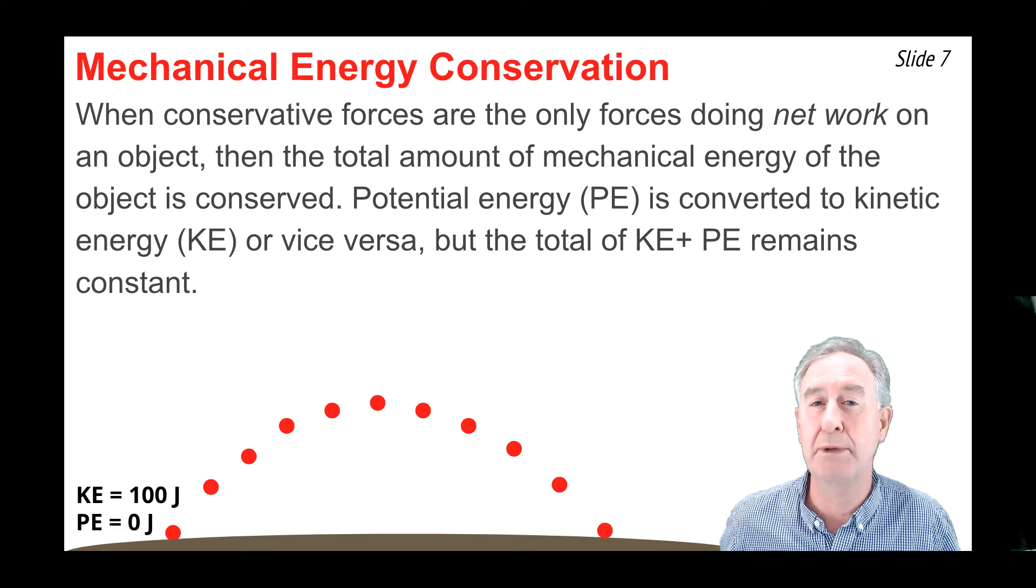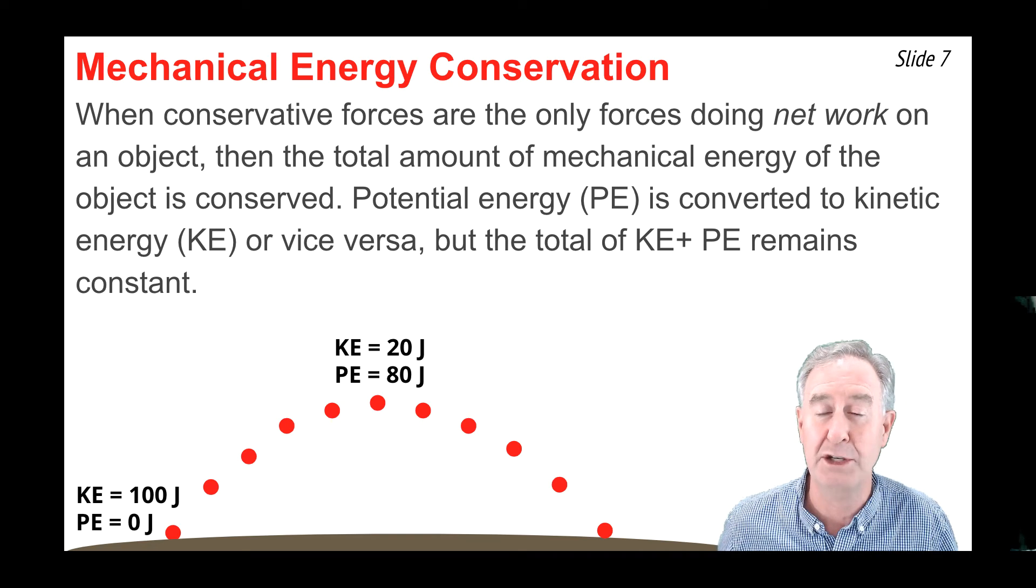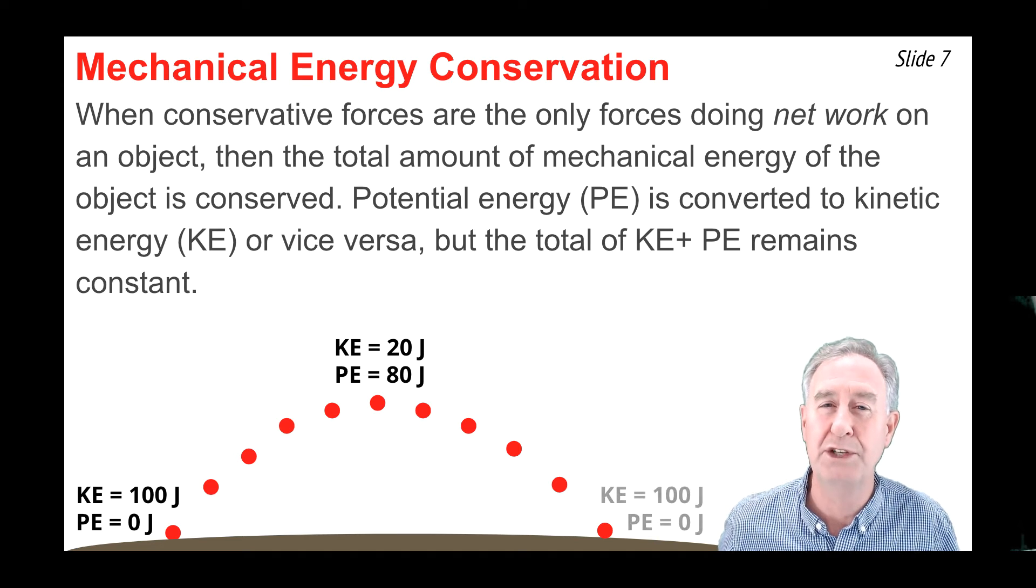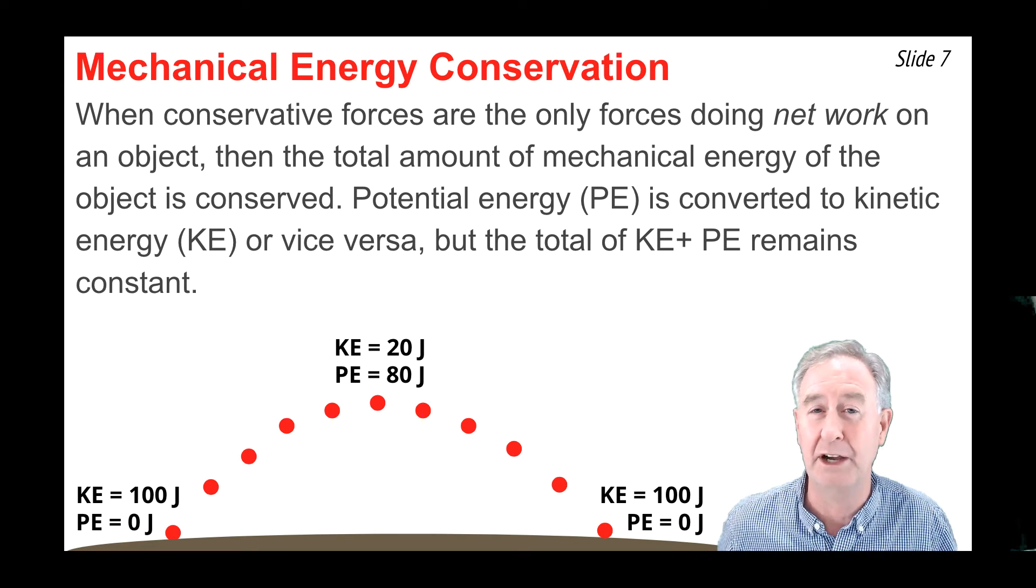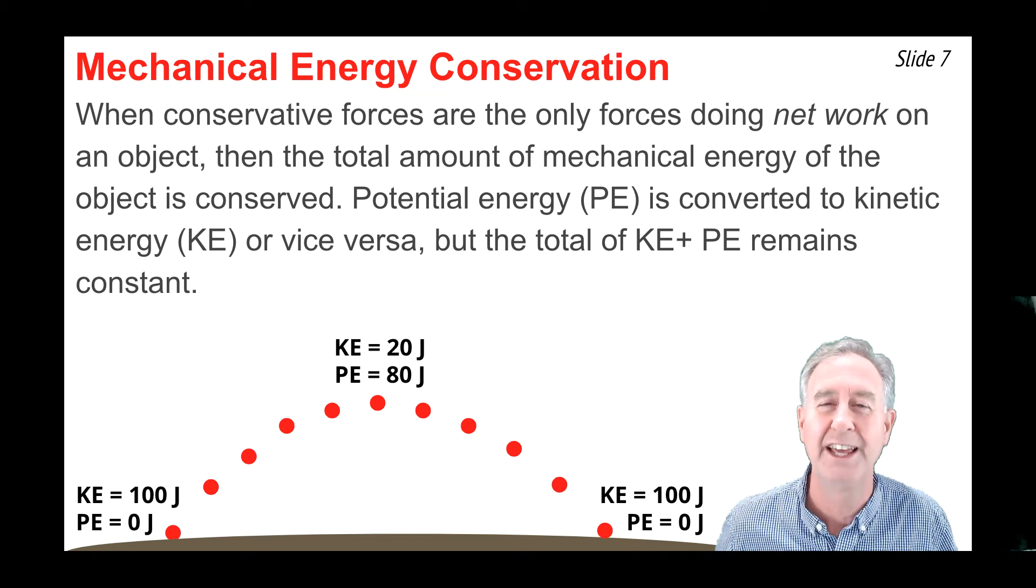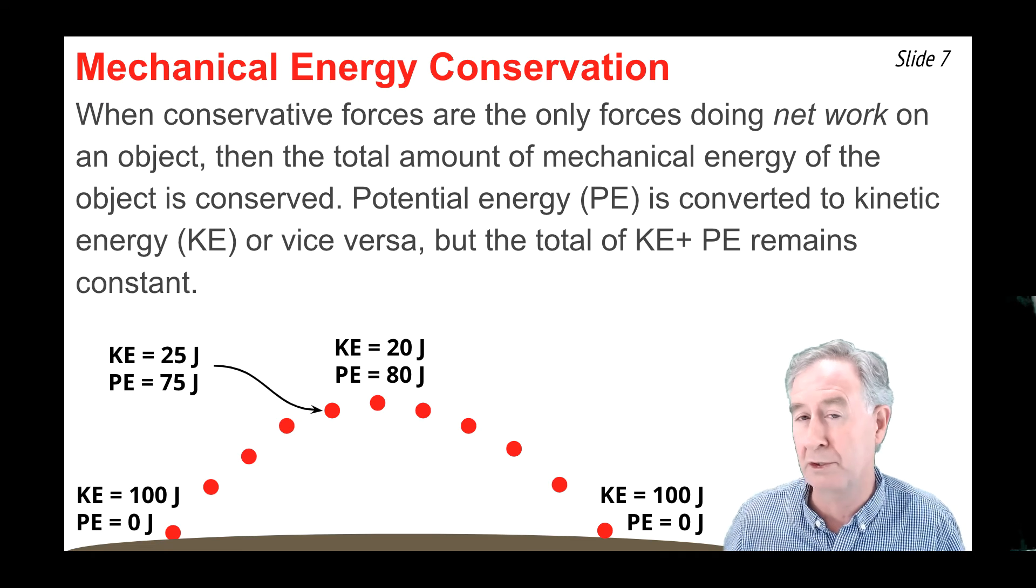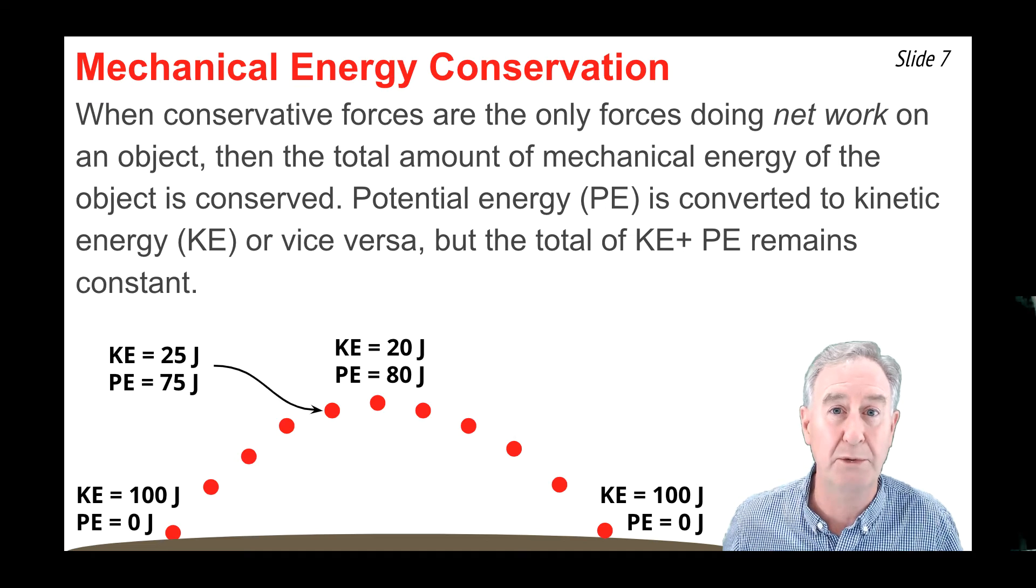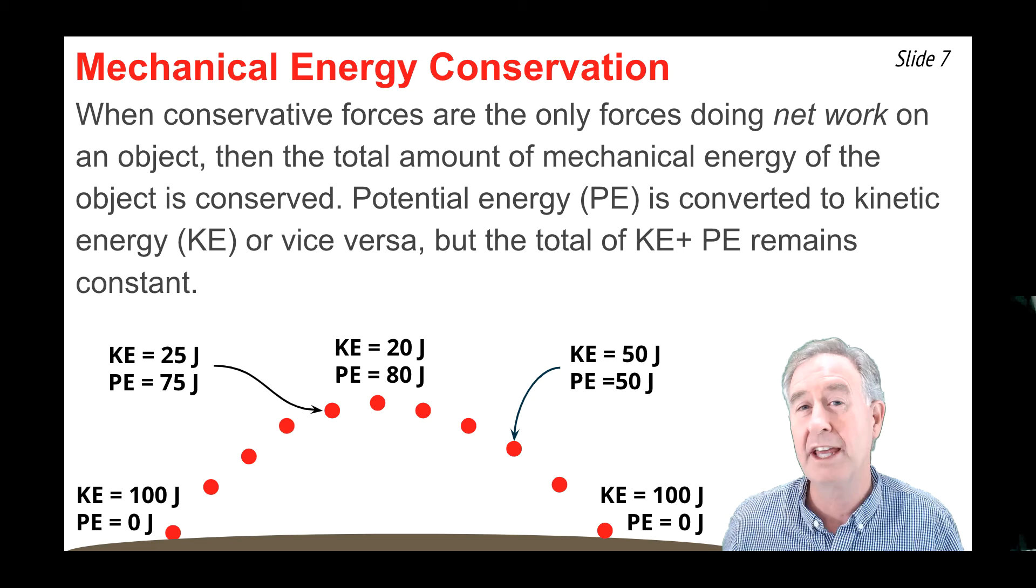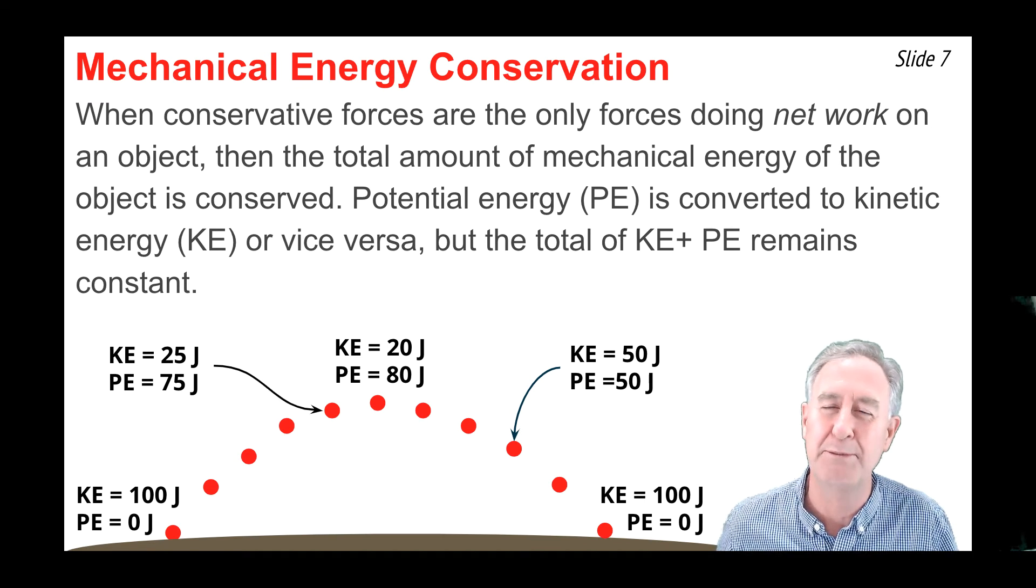By the time it reaches the peak of its trajectory, its potential energy could be 80 joules, and its kinetic energy would have to go down to 20 joules, but the total remains 100 joules. When it reaches the ground, or just before reaching the ground, it would be back to 100 joules of total mechanical energy all in the form of kinetic energy. At every point along its trajectory, the total mechanical energy would be 100 joules. The sum of kinetic and potential would be the same. As the potential energy goes up, the kinetic energy goes down, and as the potential energy goes down, the kinetic energy goes up, but the total remains constant.